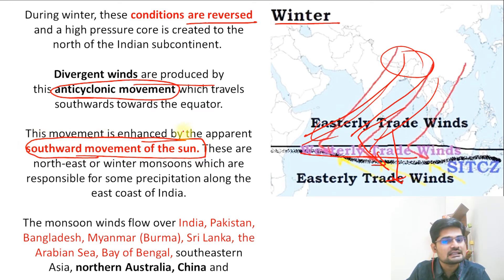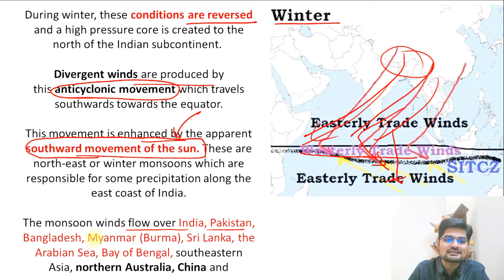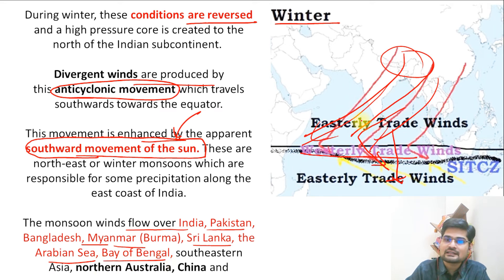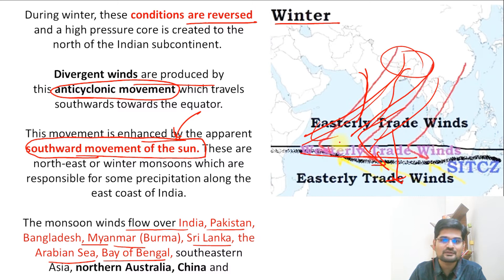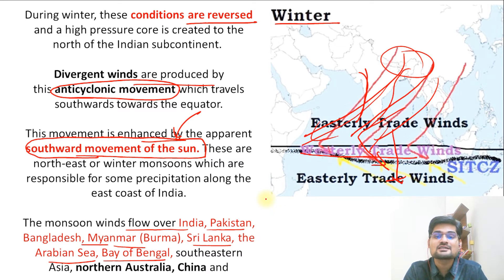These monsoon winds flow over India, Pakistan, Bangladesh, Myanmar, Sri Lanka, the Arabian Sea, and the Bay of Bengal. It has two branches — one is the Arabian Sea branch and one is the Bay of Bengal branch. That is the concept of summer and winter monsoon — important in terms of the seasonal character, seasonality, or periodicity that we define in terms of the summer and winter monsoon season.